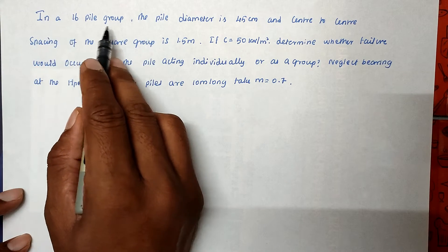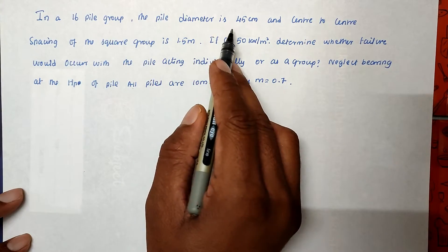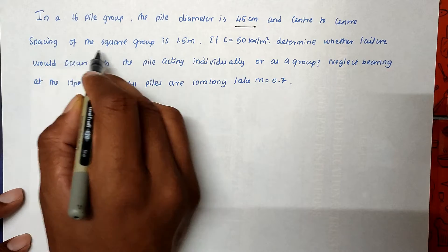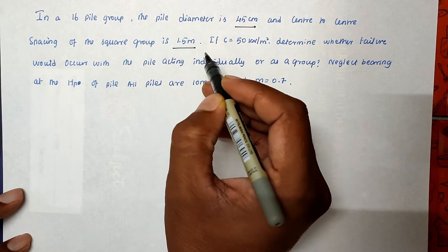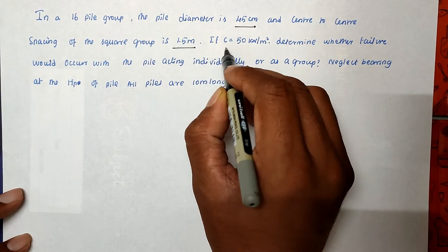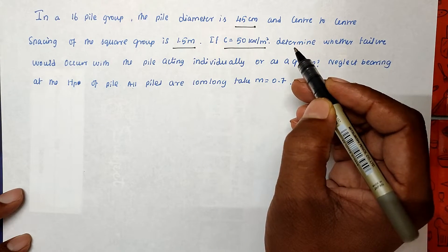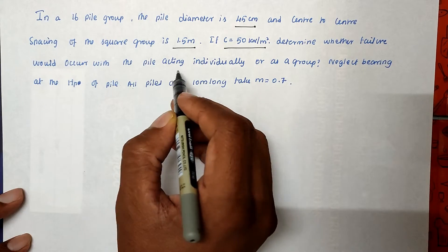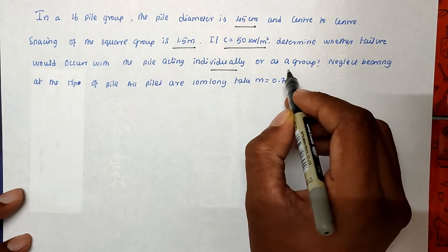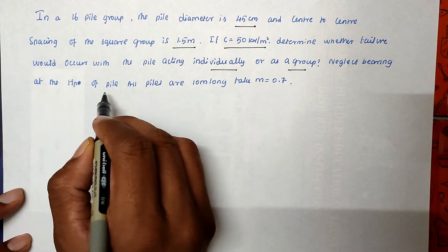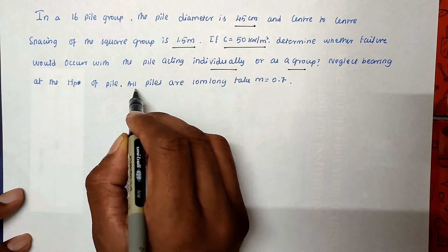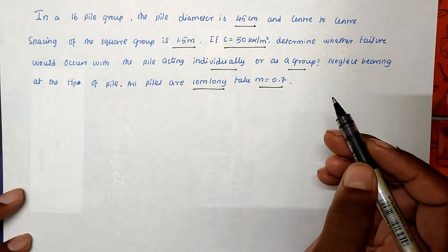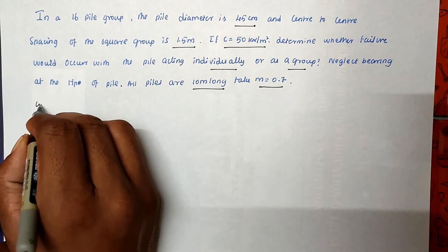So the problem is: in a 16-pile group, the pile diameter is 45 cm and the center-to-center spacing of the square group is 1.5 m. If c (unit cohesion) equals 50 kN/m², determine whether failure would occur with the pile acting individually or as a group. Neglect bearing at the tip of the pile. All piles are 10 m long and take m equal to 0.7.